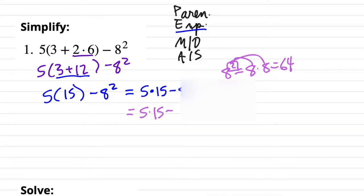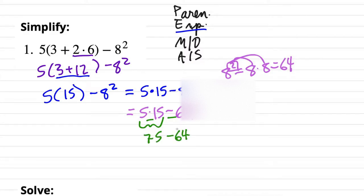The exponent 2 means the number of times we multiply 8 by itself. You could say 8 squared, or 8 to the second power, or 8 to the 2. So that's 64. Going back to PEMDAS, we have a multiplication and a subtraction, so we do multiplication first: 5 times 15 is 75, minus 64 is a spectator for now. And 75 minus 64 is 9. We want to box, circle, or underline our answer so our teacher can see the final result.